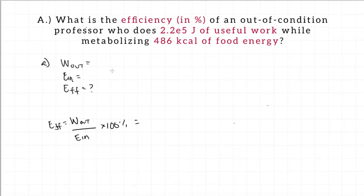we can use the efficiency equation. From the problem, we can determine that the work out done by the professor is 2.2 times 10 to the power of 5 joules, and that the amount of energy going into his body is 486 kcals. We can convert the kcals into joules of energy as there are 4184 joules per kcal. Plugging the values into the equation, we find that the efficiency of the professor is 10.8%.